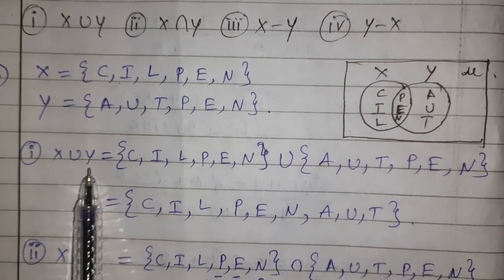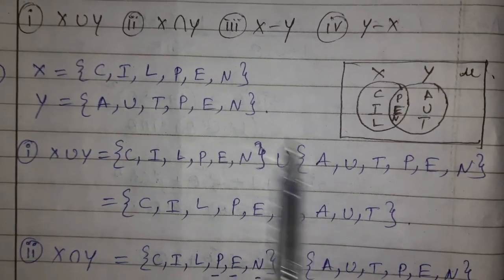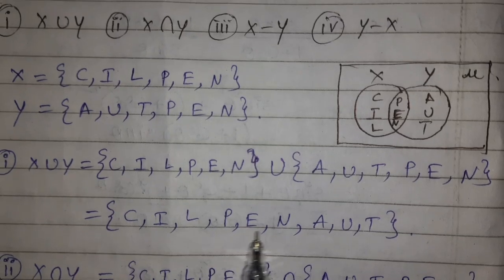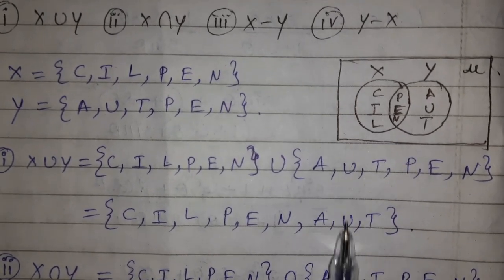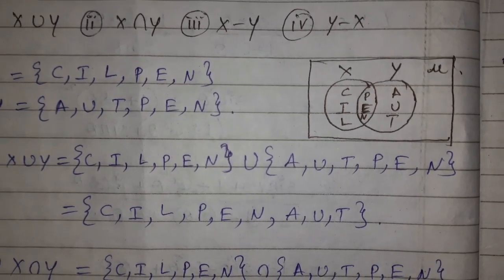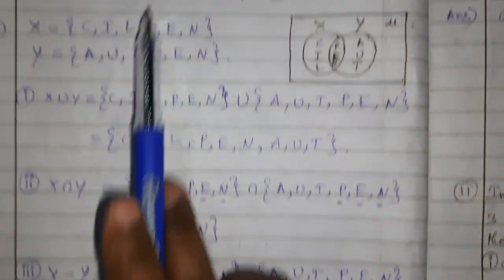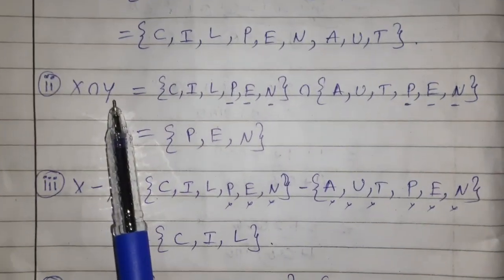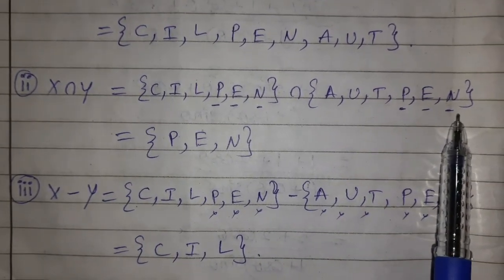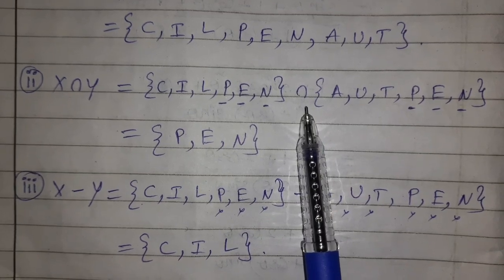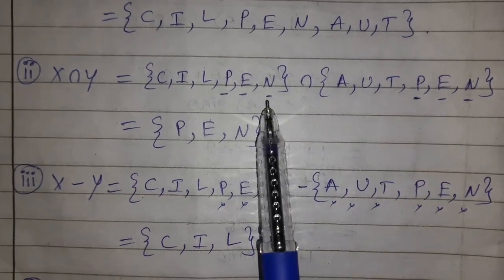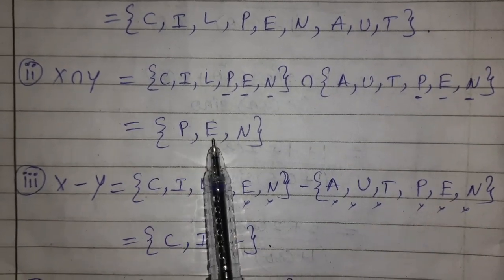X ∪ Y means all elements of both sets: {C, I, L, P, E, N, A, U, T}. X ∩ Y means common elements only: P, E, N are common in both sets. So X ∩ Y = {P, E, N}.